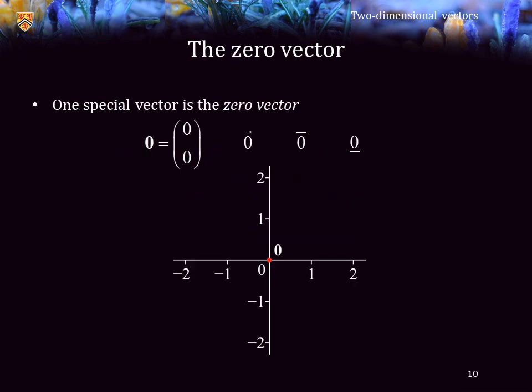There is one special vector we have to introduce, and that is the zero vector, represented either as a bold-faced zero or a zero with an arrow on top. This vector is the point that is zero in each direction. And just in case you didn't see it, there it is. We may call this either the zero vector, or we may sometimes call this the origin, depending on what is appropriate terminology.